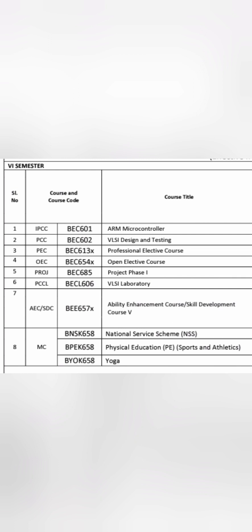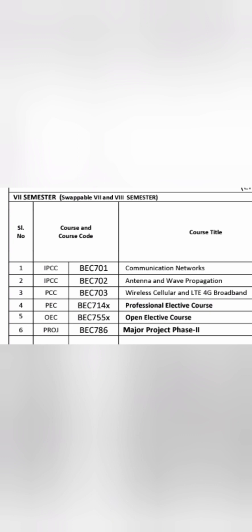In sixth semester, you will learn ARM microcontroller, VLSI design and testing, and again professional and open electives are available. You will also have to do a project - your internship projects - along with VLSI lab and enhancement courses. The professional and open elective options available in semester six include satellite communication, network and cyber security, machine learning, and digital image processing. You select one out of four, which can be computer-related or non-computer.